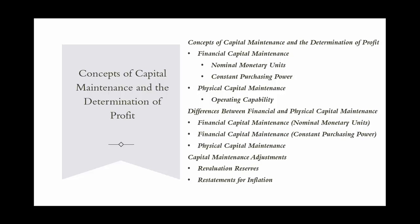Under physical capital maintenance, profit represents the increase in the entity's physical productive capacity. All price changes affecting assets and liabilities are viewed as changes in the measurement of physical productive capacity and are treated as capital maintenance adjustments rather than profit. For example, MNO Energy starts the year with machinery capable of generating 1,000 megawatts of power. During the year, it acquires new technology increasing capacity to 1,200 megawatts. The additional 200 megawatts represent an increase in physical productive capacity, indicating profit under the physical capital maintenance concept.